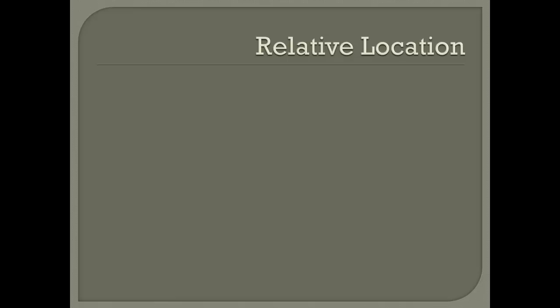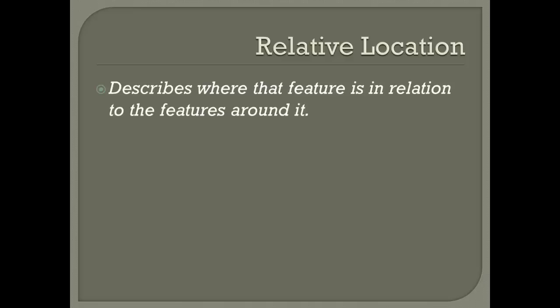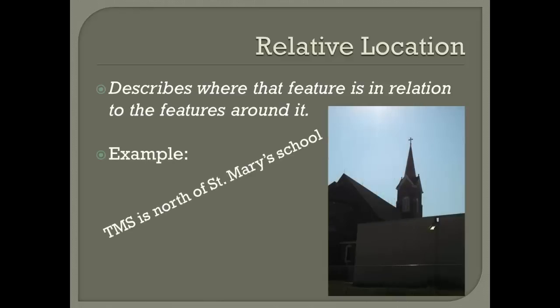The next type of location is relative location. This is not as exact as absolute location, but it still tells us where to find a geographic feature. Relative location describes where that feature is in relation to the features around it. So we are not pinpointing where that feature is — we are saying what it's next to. An example for Tomah Middle School is TMS is north of St. Mary's School. If somebody is familiar with Tomah, they do not need to know where the middle school is as long as they can see the steeple of St. Mary's.